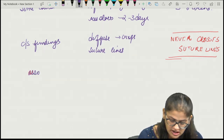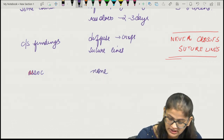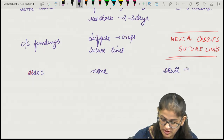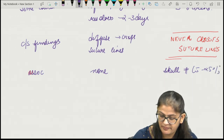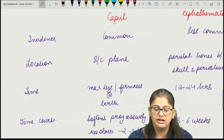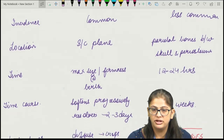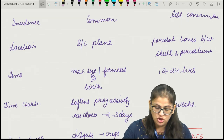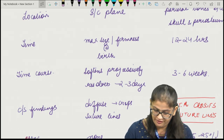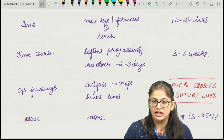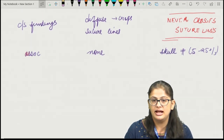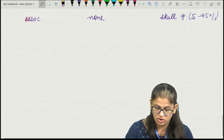There are hardly any associations known with caput, but cephalohematoma may be associated with skull fractures in 5 to 25% of cases. These are the important differentiating features between caput succedaneum and cephalohematoma.